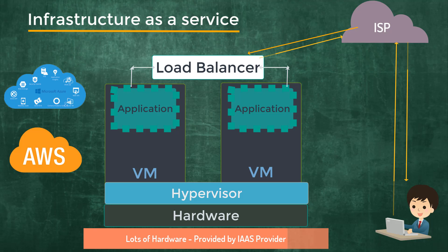IaaS is the effective model for workloads that are temporary, but some organizations have gone for permanent workloads as well. Infrastructure as a service is the most basic category of cloud computing services. With infrastructure as a service, you rent IT infrastructure — servers, virtual machines, storage, networks, and operating systems from a cloud provider on a pay-as-you-go basis.